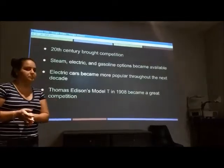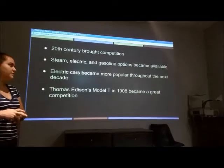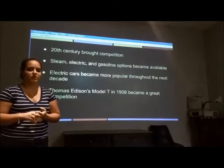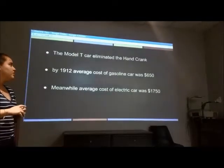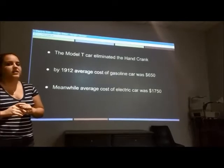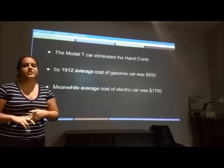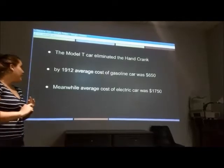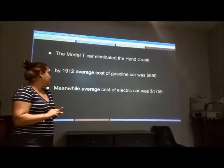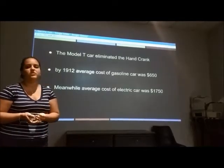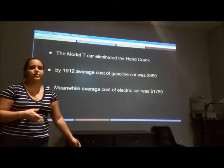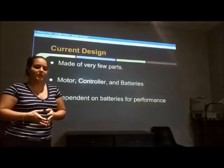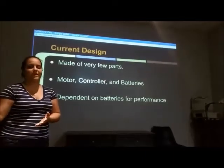That is until 1908, where Thomas Edison came out with the Model T and it brought great competition to electric cars. What was special about it was that it eliminated the hand crank, making it much easier to start and to maneuver the vehicle. By 1912, the average cost of a gasoline vehicle was $650 compared to an electric vehicle which was $1,750, which made the electric vehicle kind of just fade away.